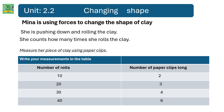There are two columns. The first column is number of rolls and the second column is number of paper clips long. The first box says 10, the second is 20, 30, and 40. In number of paper clips long it is 2, 3, 4, and 6.